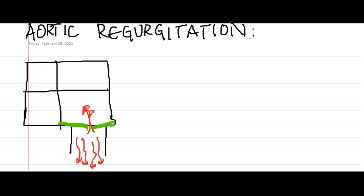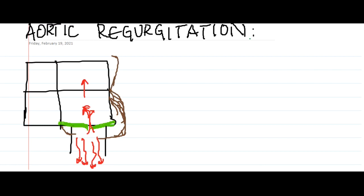Because of increased blood regurgitating back into the left ventricle, there is increased volume overload in the left ventricle, resulting in left ventricular dilatation. Slowly this pressure also goes into the left atrium, leading to left atrial dilatation, and this can even go into the pulmonary circulation causing pulmonary edema and congestion.